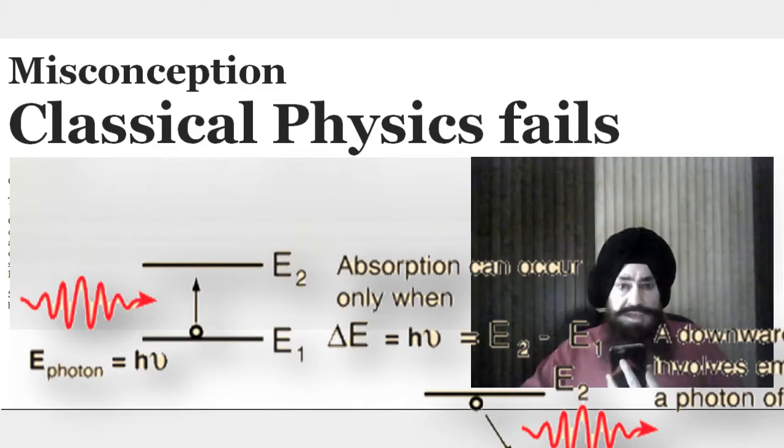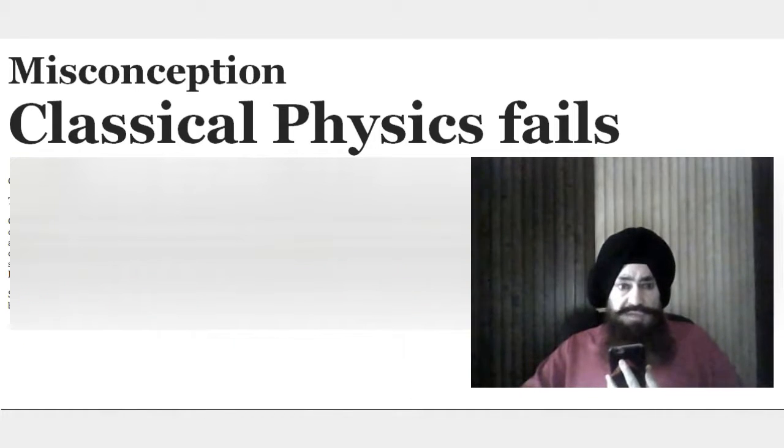That's why you still study classical physics. If classical physics failed everywhere, then why study it? It would have been removed from physics entirely. But it's in physics, it has applications, it has its own field. But there are certain sizes where it has limitations, which we discovered, like black body radiation, Compton effect, photoelectric effect.